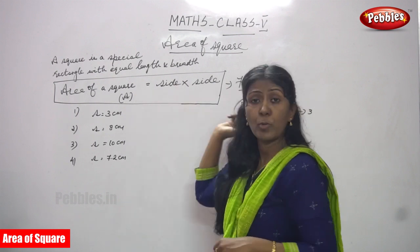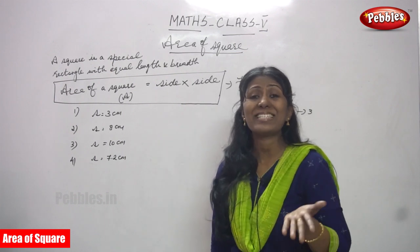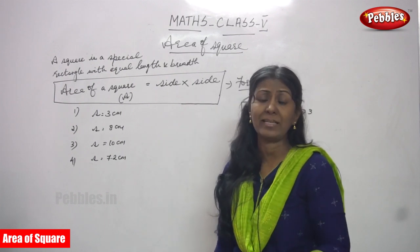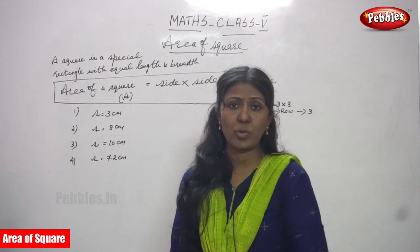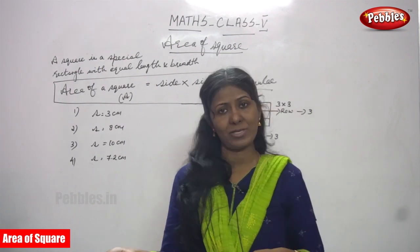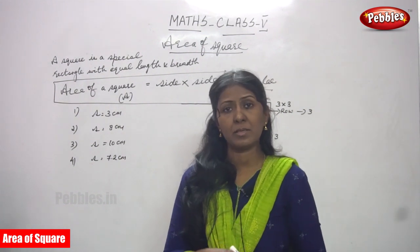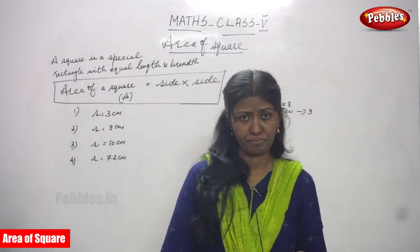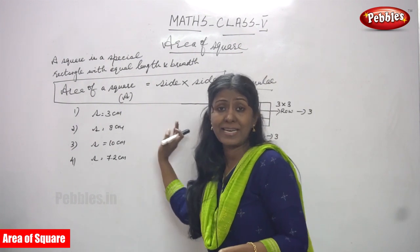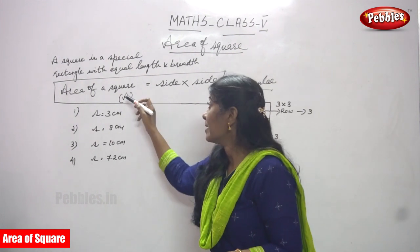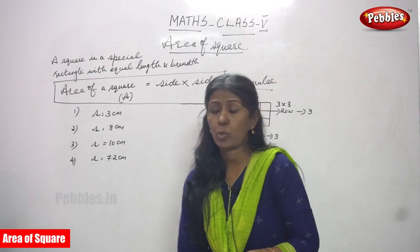Area of a square — what is the formula? Side into side. So we have to multiply side by side, which is side squared. The length of the side multiplied by the length of the side — one is the length and the other is the breadth. Area of a square is equal to side into side, or side squared.